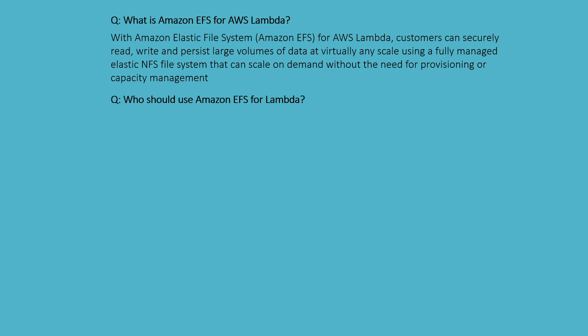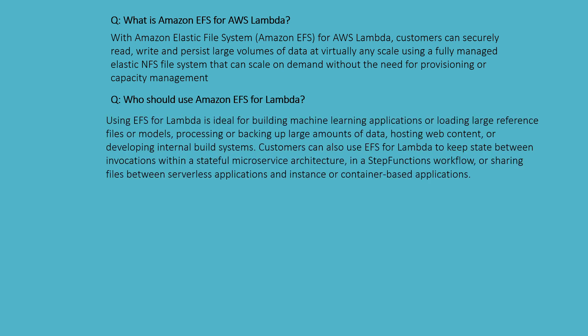Who should use Amazon EFS for Lambda? Using EFS for Lambda is ideal for building machine learning applications, loading large reference files for models, processing backends, backing up large amounts of data, and hosting web content and internal build systems. Customers can also use EFS for Lambda to keep state between invocations within stateful microservices architectures, in Step Functions workflows, and for sharing files between serverless applications and container-based applications.